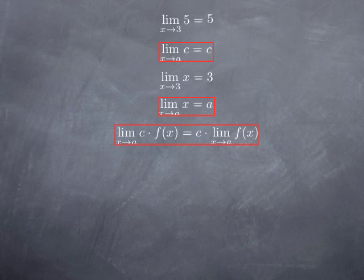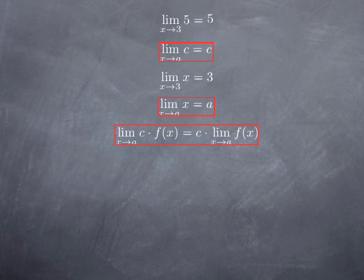Now assume that I have a function f that admits a limit at a, and I consider the new function obtained by multiplying f by a constant c. I want to know if this new function also has a limit at a. It turns out that it does, and to obtain this limit, you simply multiply the limit of f by the constant c. Let's look at how we would prove this using the epsilon-delta definition.